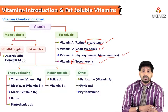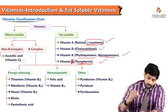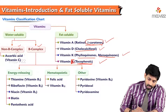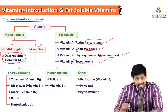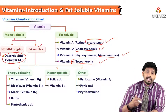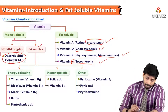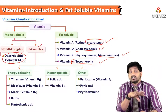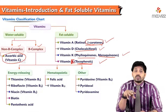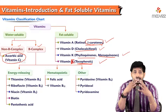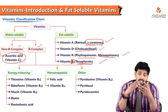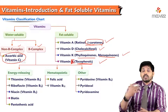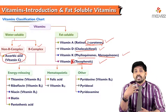Coming to water-soluble vitamins, there are two categories: non-B complex and B complex. Non-B complex includes ascorbic acid, vitamin C, which is also a prominent antioxidant second to vitamin E. B complex vitamins are divided into three types based on their function: energy-releasing, hematopoietic, and other.